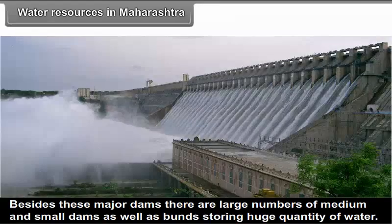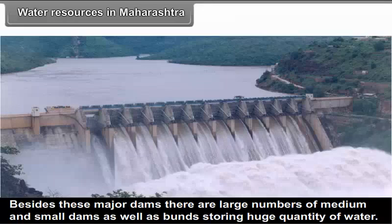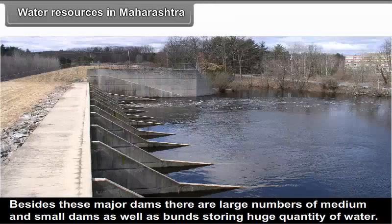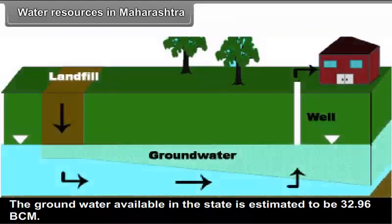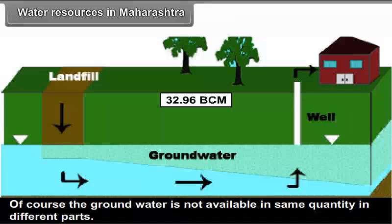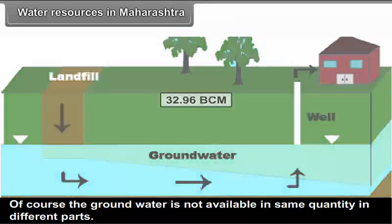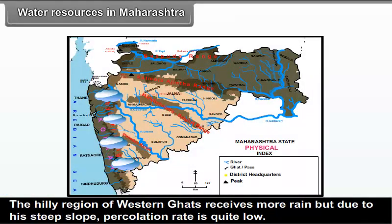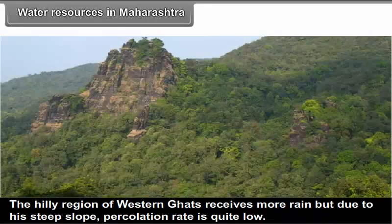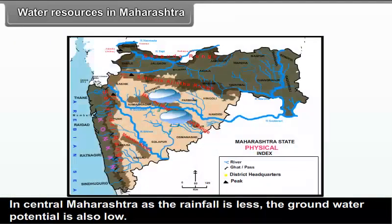Besides major dams, there are a large number of medium and small dams as well as bunds storing huge quantities of water. The ground water available in the state is estimated to be 32.96 BCM. However, ground water is not available in the same quantity in different parts. The hilly region of Western Ghats receives more rain but has low percolation due to steep slopes. In central Maharashtra, rainfall is less so ground water potential is also low. Comparatively, in the low-lying areas within river basins, ground water is more.